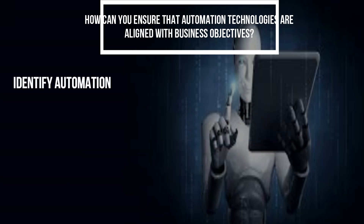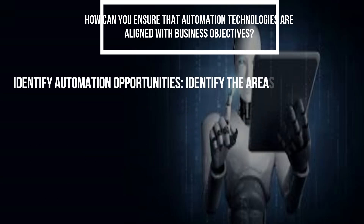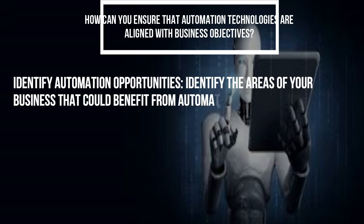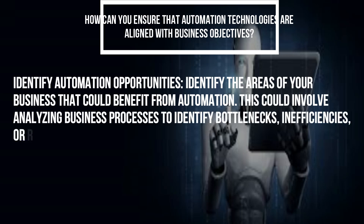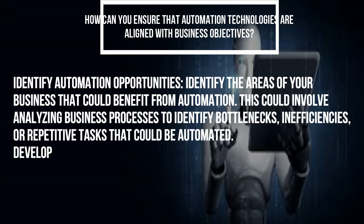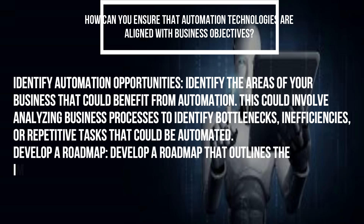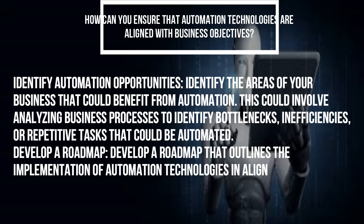Identify automation opportunities: identify the areas of your business that could benefit from automation. This could involve analyzing business processes to identify bottlenecks, inefficiencies, or repetitive tasks that could be automated. Develop a roadmap that outlines the implementation of automation technologies in alignment with business objectives.